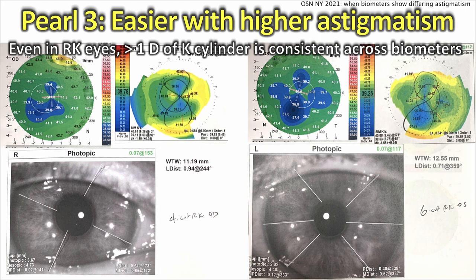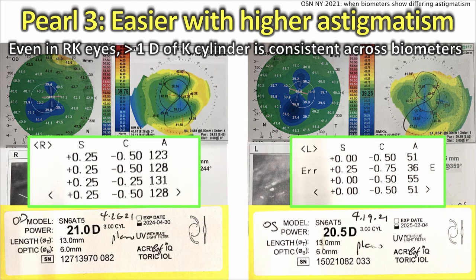Even RK eyes with more than one diopter can still be consistent across the biometers. Here RK cuts — four cuts on one eye, six on the other — and look at the biometers showing both the topography and tomography of each eye: they're near identical. Here's that same RK patient's post-op results — that's the actual autorefractor printout. That's pretty darn close. In five or ten years they'll be back with a little bit of hyperopia, but the toric lenses were certainly the right choice.